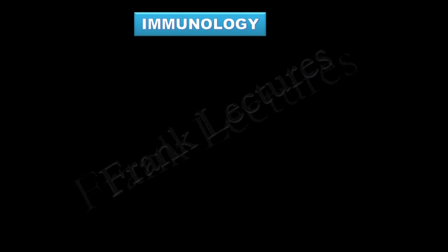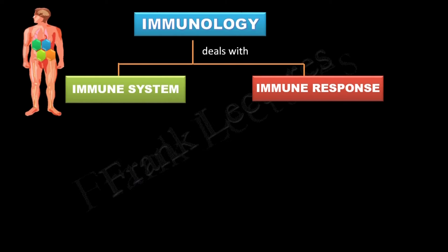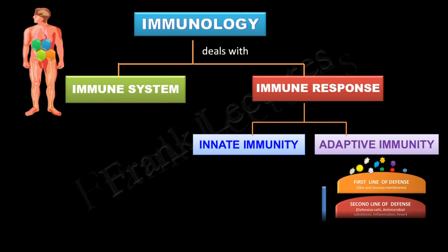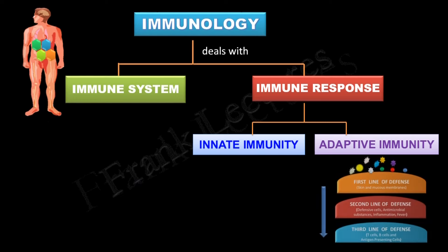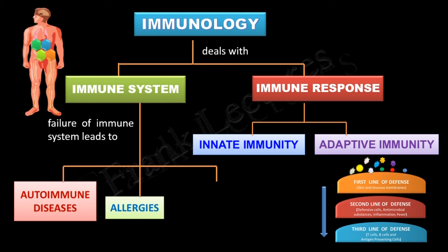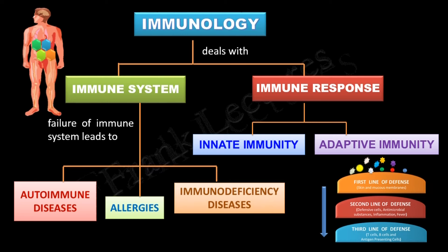At the end of this lecture, let us summarize the main points. Immunology deals with the immune system and immune response. Based on type of immune response, immunity is of two types: innate immunity and adaptive immunity. Together they form barriers — the first, second, and third lines of defense. If the immune system fails, it leads to allergies, autoimmune diseases, and immunodeficiency diseases.